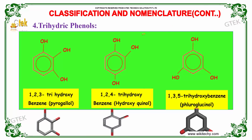The last type of Phenol is Trihydric Phenols. The first molecular formula is 1,2,3-Trihydroxybenzene, also known as Pyrogallol. The next molecular structure represents Trihydroxybenzene, also known as Hydroxyquinol. And the last one is 1,3,5-Trihydroxybenzene, also known as Phloroglucinol.